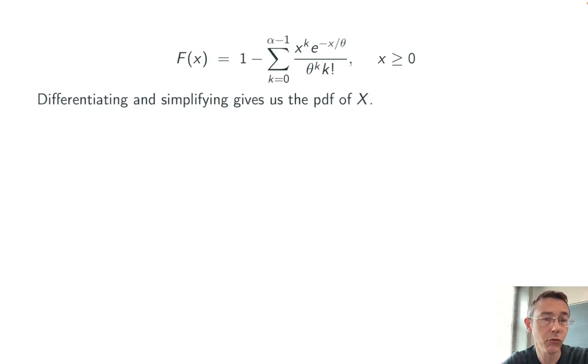So this cumulative distribution function is kind of ugly. The good news is that if we differentiate it and simplify to get the probability density function, the PDF, things get slightly nicer. We get x to the alpha minus 1, e to the negative x over theta, alpha minus 1 factorial times theta to the alpha in the denominator. Since x is modeling waiting time here, the support is going to be only positive values, so x greater than or equal to zero.